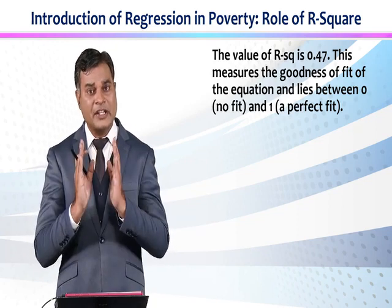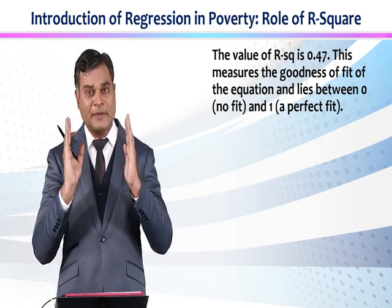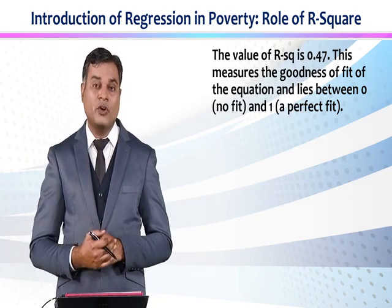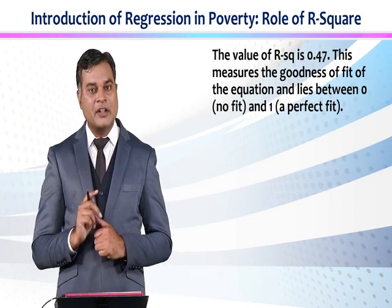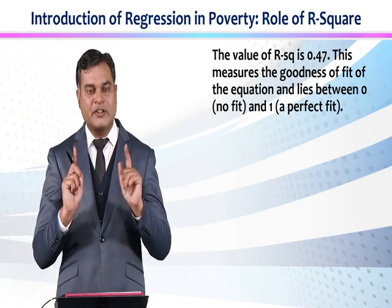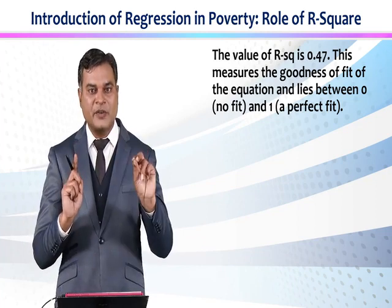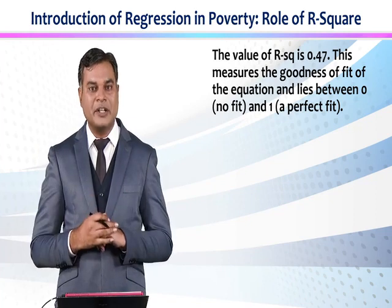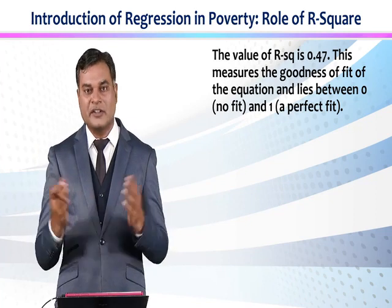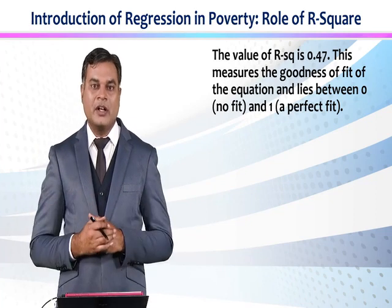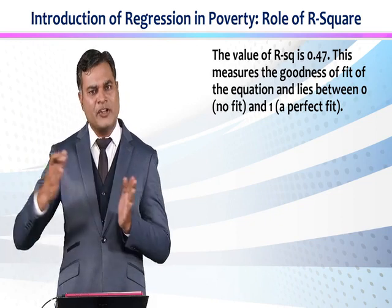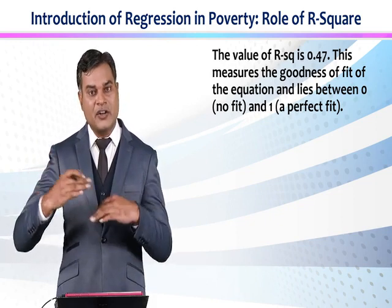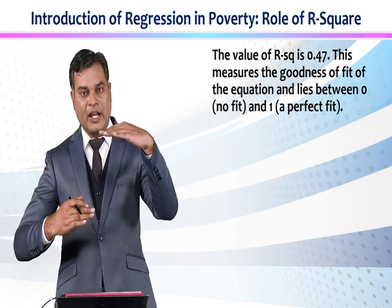R-square's value will lie between 0 and 1. If its value is 0.47, it means 47% changes in the dependent variable are because of the independent variable. And the remaining 53% are not explained in the model. If you include one more variable in the same model, R-square's value can increase or decrease.